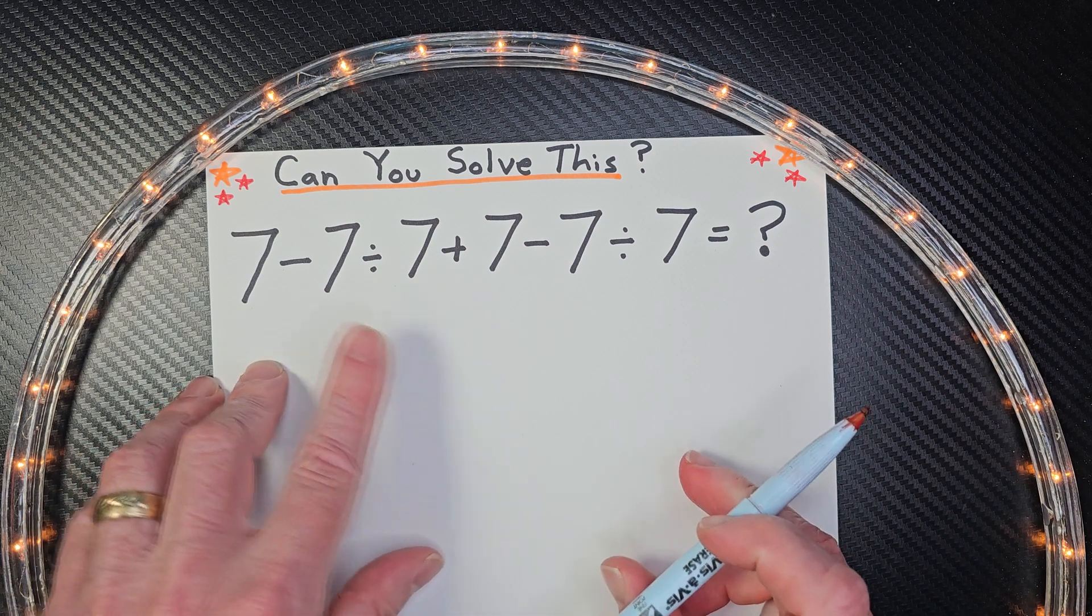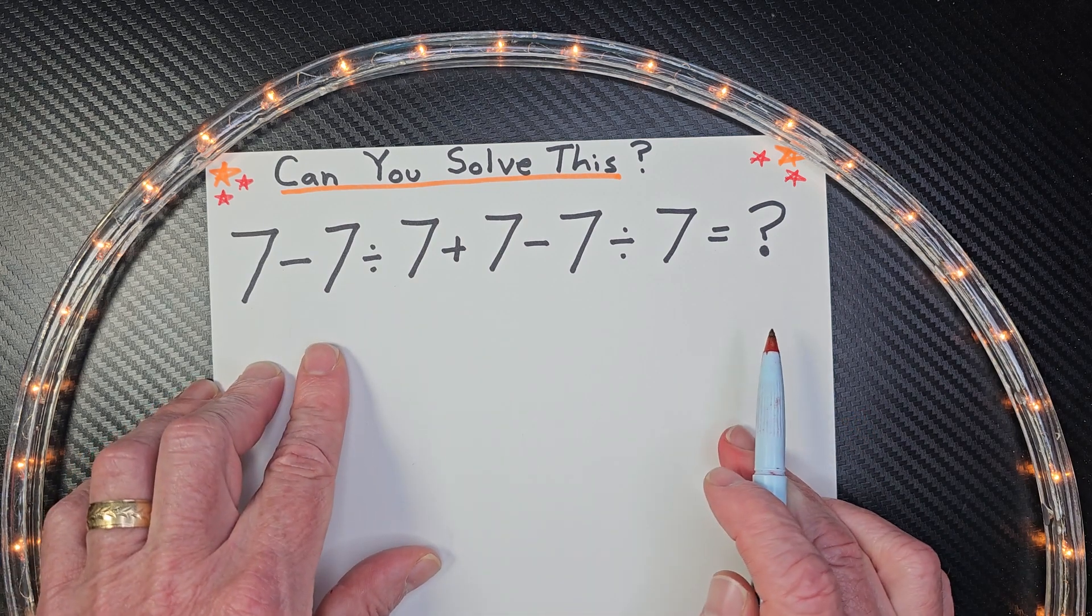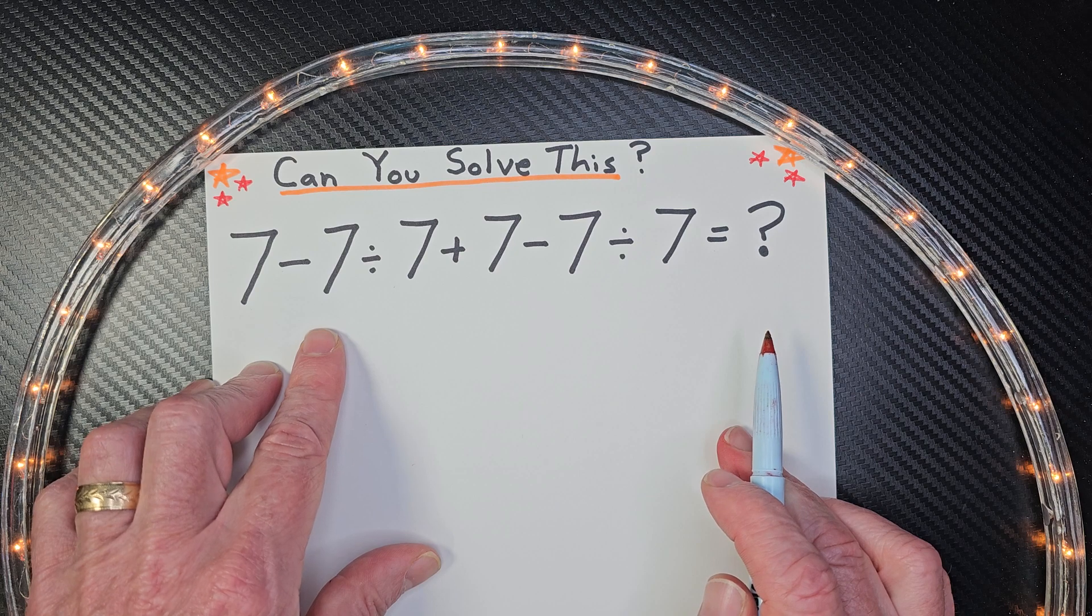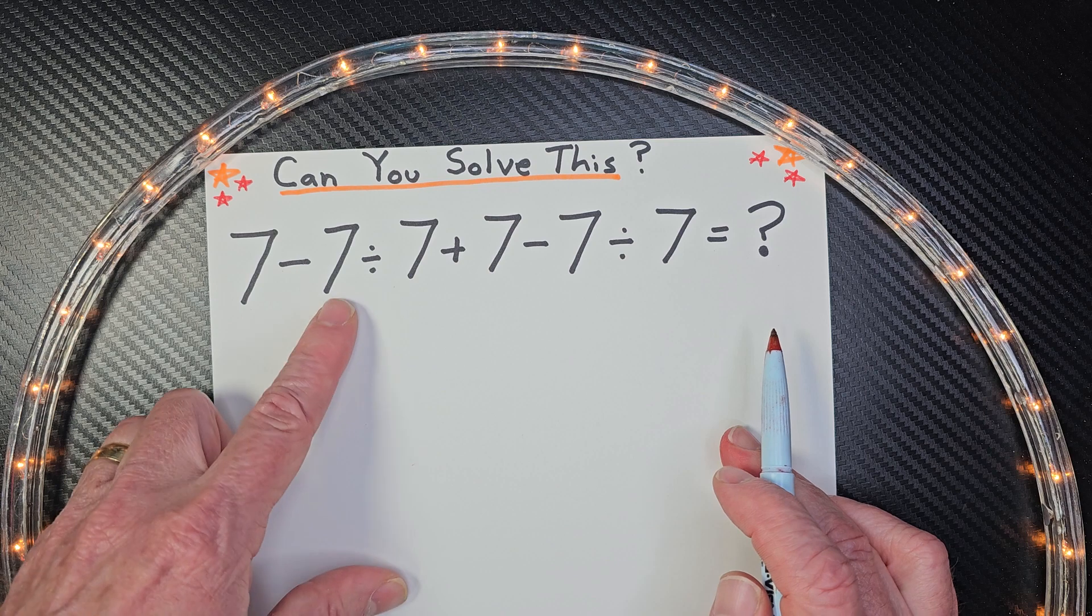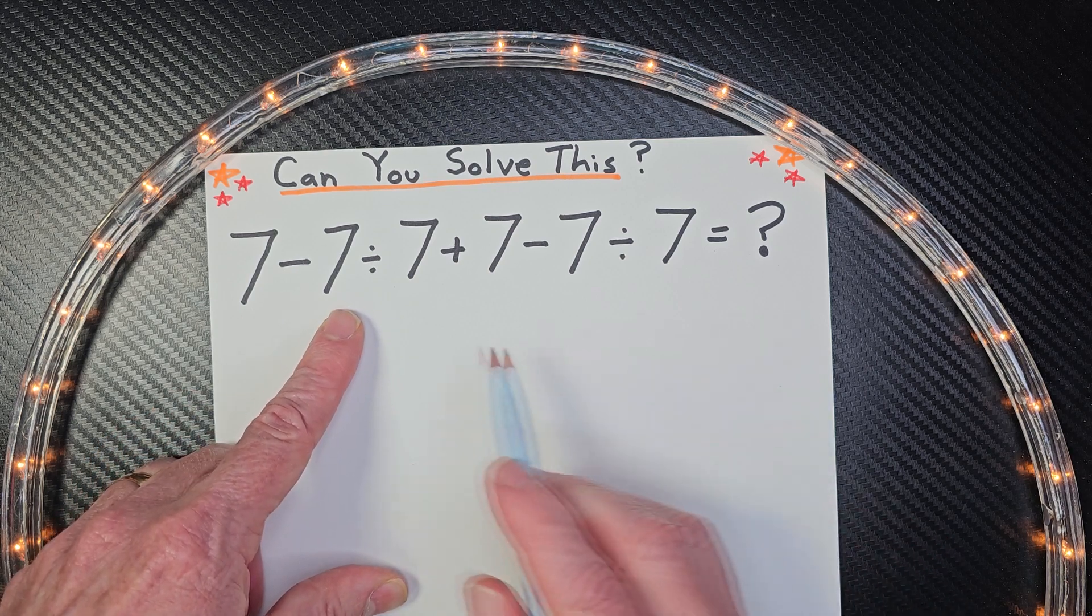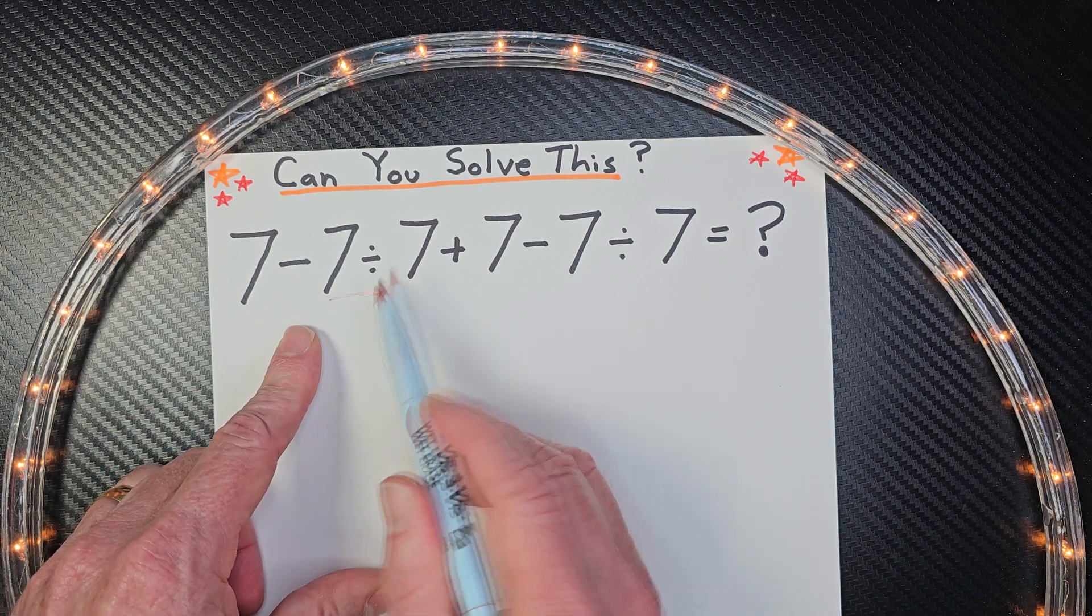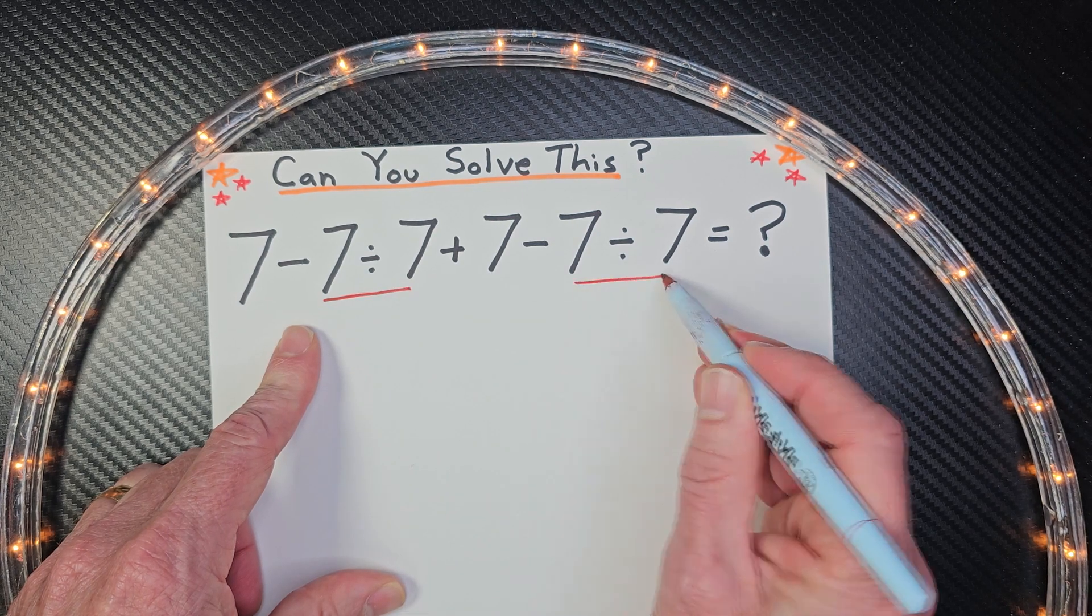Remember, order of operations. The third step is we need to do multiplication and division from left to right, and then addition and subtraction from left to right. So let's go ahead and do our division first. I see a division problem right here and right here.